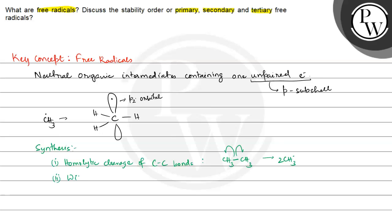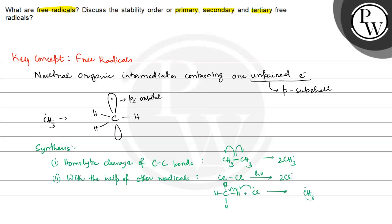Another method is with the help of other radicals. This second method is easier. For example, consider chlorine gas — Cl single bond Cl. If we expose it to UV light (hν), we get two Cl free radicals. These Cl radicals then react with CH4 to give CH3 free radicals along with HCl.